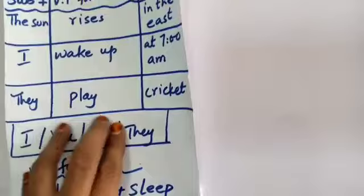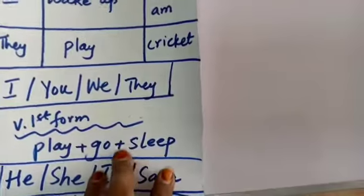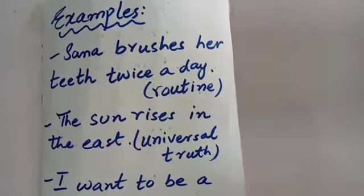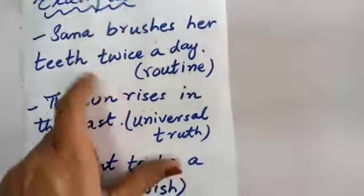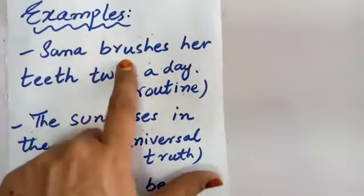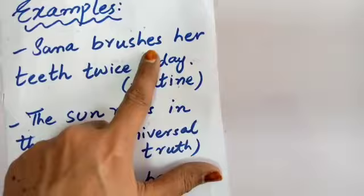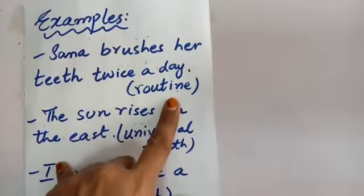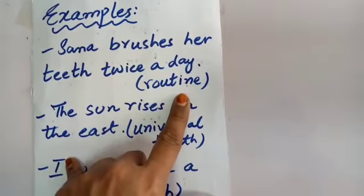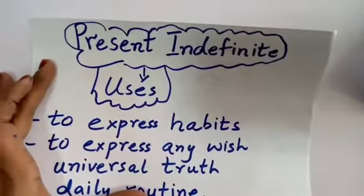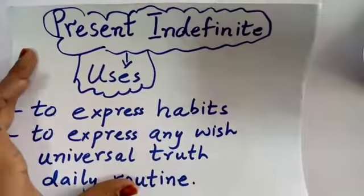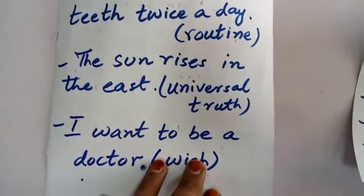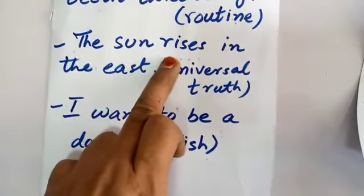'They play cricket' — 'they' is plural so we use the verb first form 'play' without 's'. Coming back to examples: 'Sunnah brushes her teeth twice a day' — Sunnah is singular, so 'brushes' gets 'es'. 'Twice a day' tells us this is her daily routine — and that is a use of present indefinite tense.